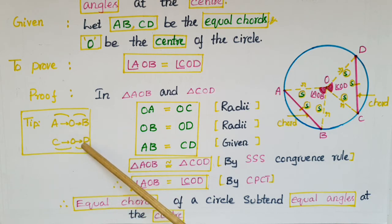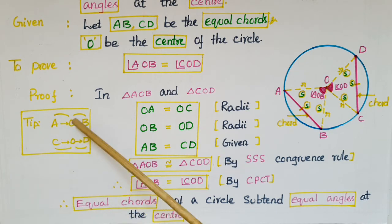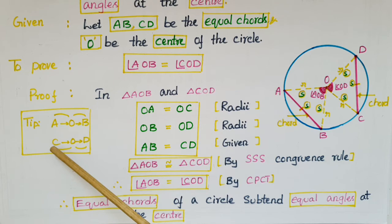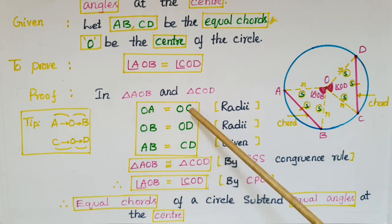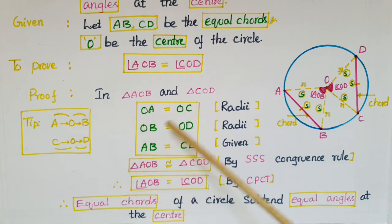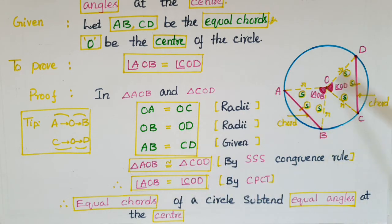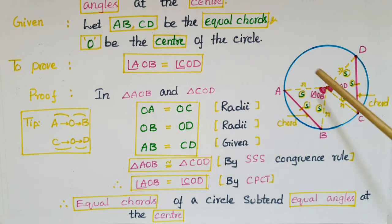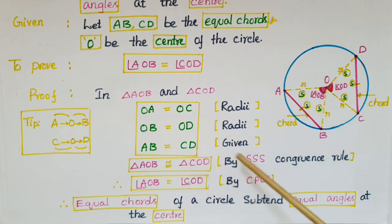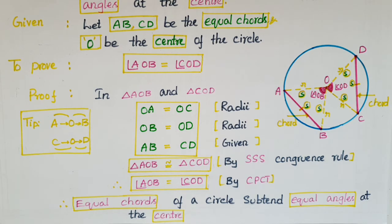OA is equal to OC and OB is equal to OD, as these are corresponding sides of the two triangles AOB and COD, and both are radii of the same circle. Also, AB is equal to CD, as these are the equal chords already given in the problem. Therefore, triangle AOB is congruent to triangle COD by the SSS congruence rule.